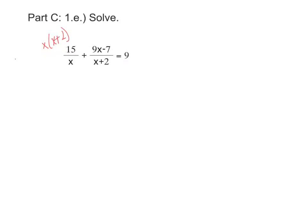Now because I want to multiply the entire left side by this x and x plus 2, that means each term is going to get multiplied by x and x plus 2. On the right side of the equation, there's only the 9, but it also has to get multiplied by x and x plus 2.